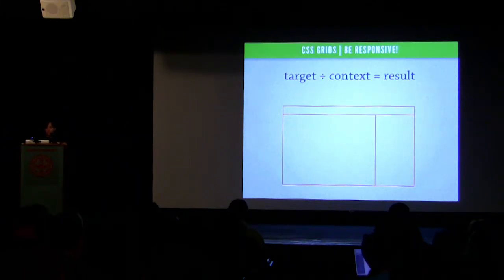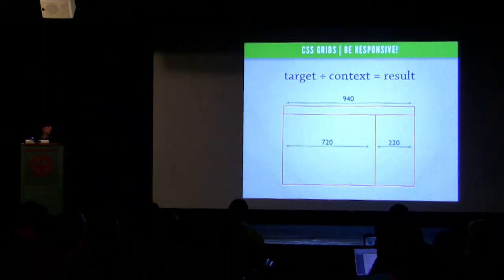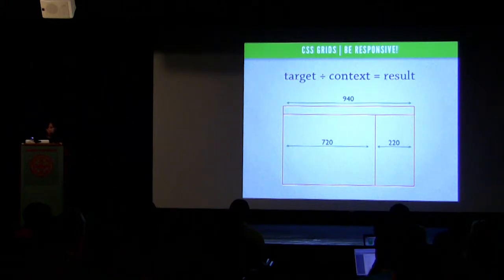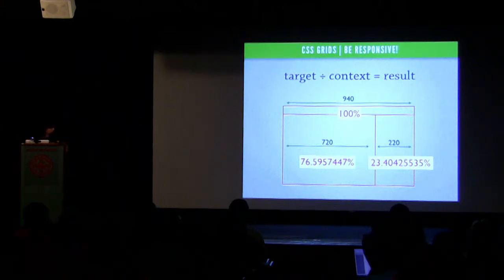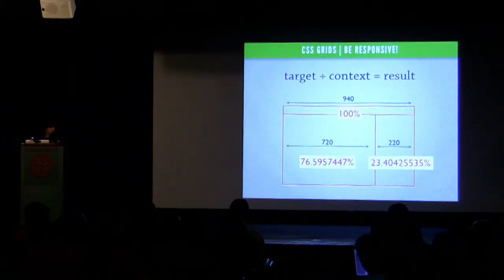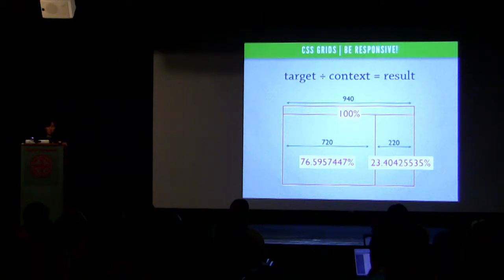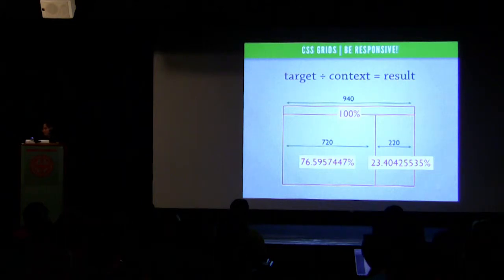So how do we do that? It's target divided by context equals result. Say you have a 940-wide grid with a 720 content area and a 220 sidebar — they all need to add up to 100%. Your 940 is your 100%, so you take 720 divided by 940 and 220 divided by 940. You get long decimal percentages, and browsers actually want those long decimals — they'll get confused if you round. So make sure you include every last decimal point.